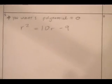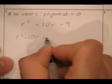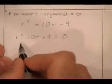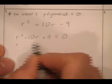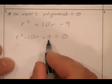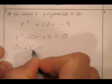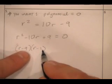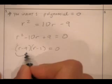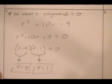We need to get a polynomial equal to zero, so bring all terms to one side: r squared minus ten r plus nine equals zero. I need two numbers that multiply to nine and add to negative ten — negative nine and negative one. So I get (r minus nine)(r minus one) equals zero. This equals zero when r equals nine or r equals one. My two solutions are nine and one.